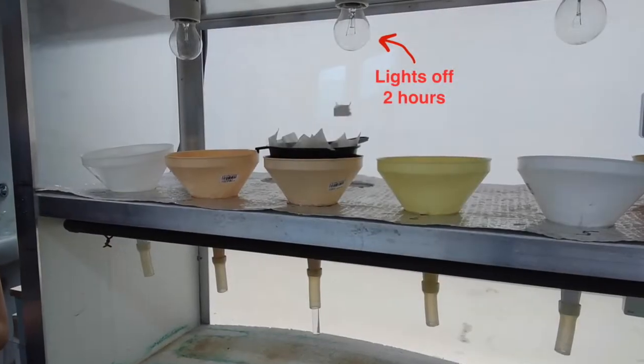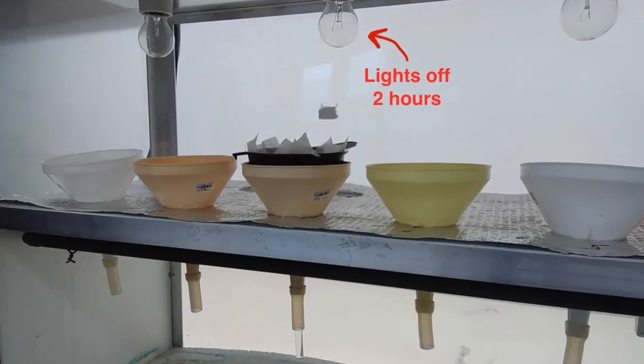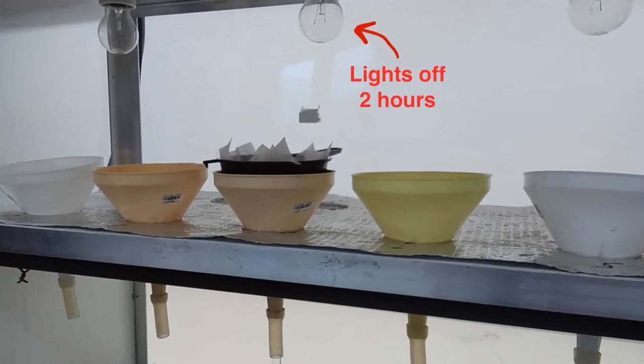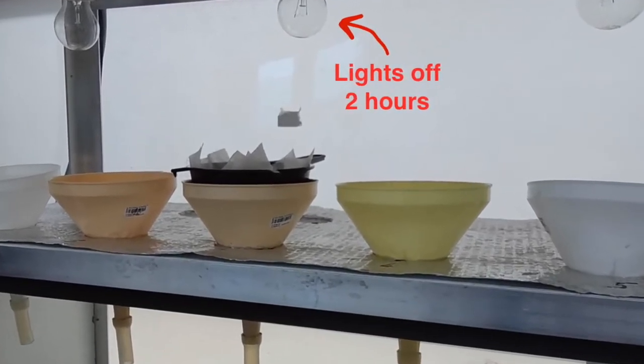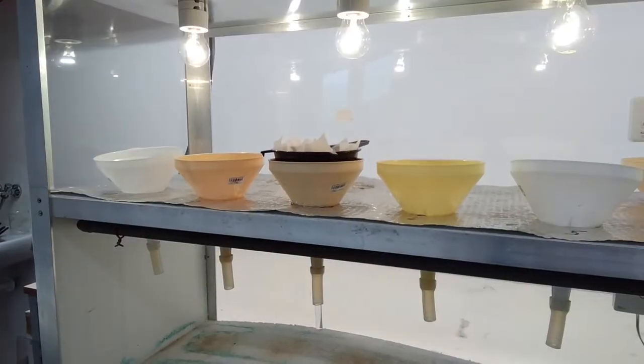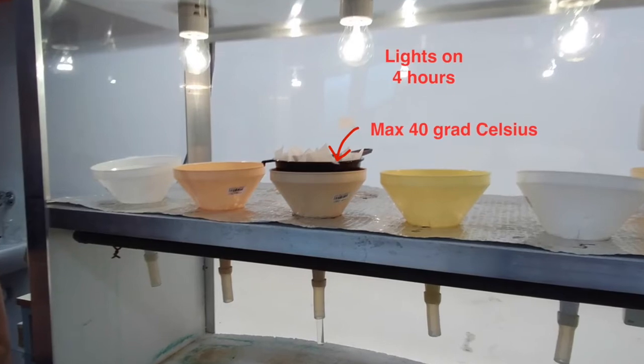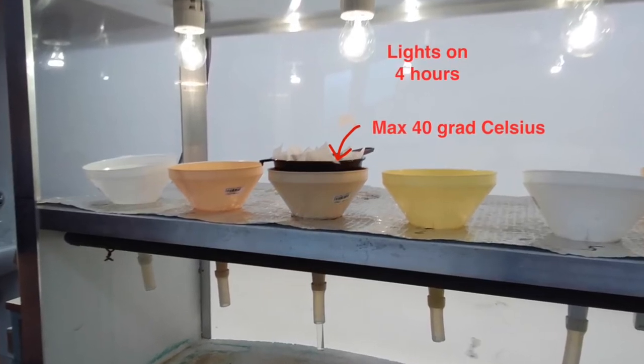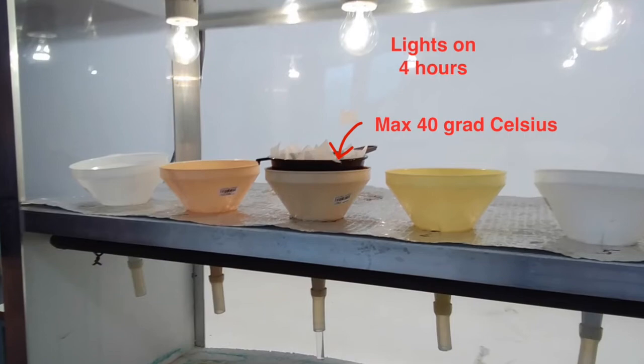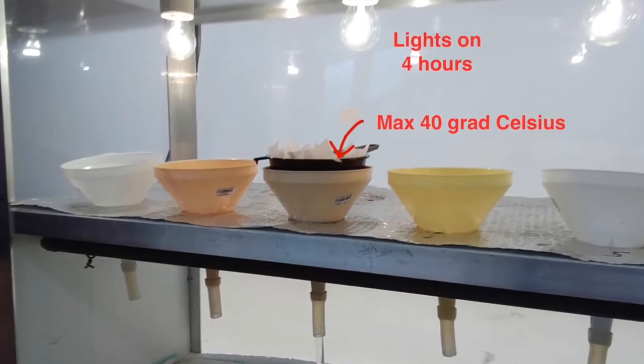The extraction is first run at room temperature for 2 hours with lights off without a heat source. After 2 hours, we switch the lights on and continue extraction for another 4 hours. The temperature in the upper part of the extractor should not exceed 40 degrees Celsius. Control the temperature with a thermometer.